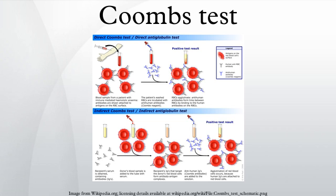Complement proteins may subsequently bind to the bound antibodies and cause RBC destruction. The direct Coombs test is used to detect these antibodies or complement proteins that are bound to the surface of red blood cells. A blood sample is taken and the RBCs are washed and then incubated with anti-human globulin. If this produces agglutination of RBCs, the direct Coombs test is positive — a visual indication that antibodies are bound to the surface of red blood cells.